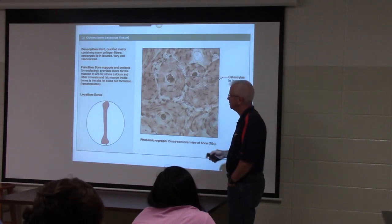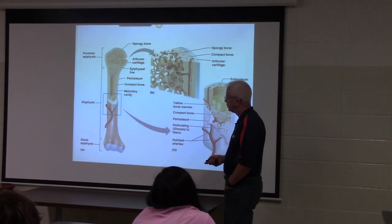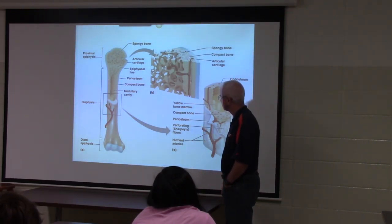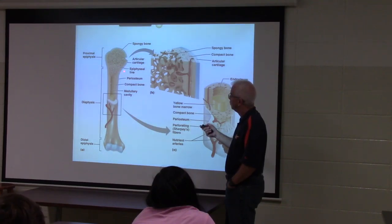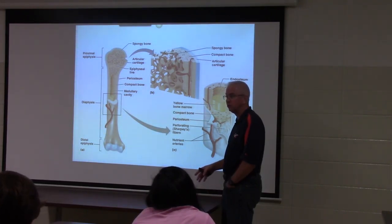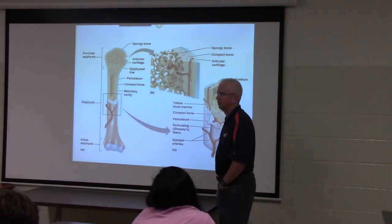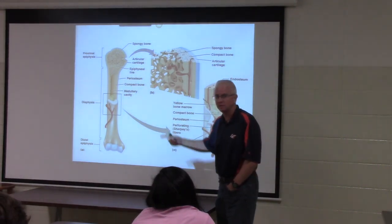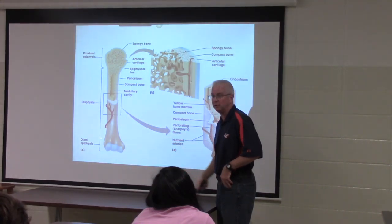A picture shows a humerus with articular cartilage - that cartilage is hyaline, derived from development, because this long bone was originally all hyaline cartilage and was converted into bone through the ossification process.